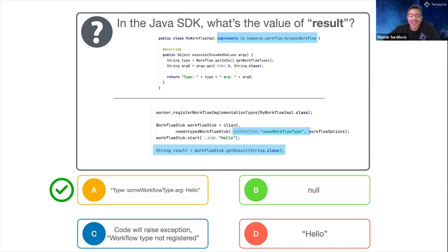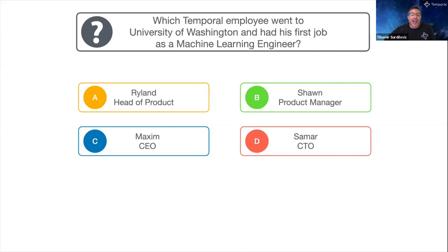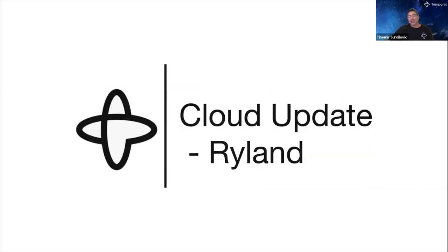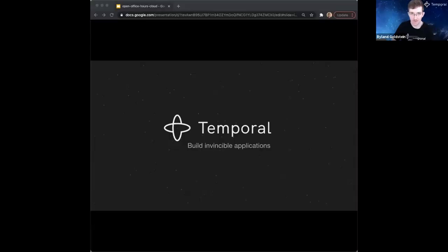Last question: which Temporal employee went to University of Washington and had their first job as a machine learning engineer? Options: A, Ryland our head of product; B, Sean our product manager; C, Maxim our CEO; or D, Samar our CTO. The answer is A, Ryland, and we'll now hand it over to him for a cloud update.